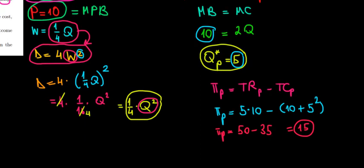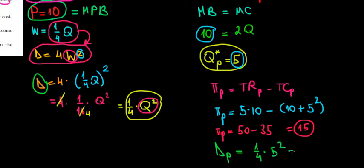What about the damage? The damage is also a function of quantity, calculated in the previous video: Damage = (1/4)Q². So the damage under private production is (1/4) × 5² = 25/4 = 6.25. That's a damage worth $6.25.